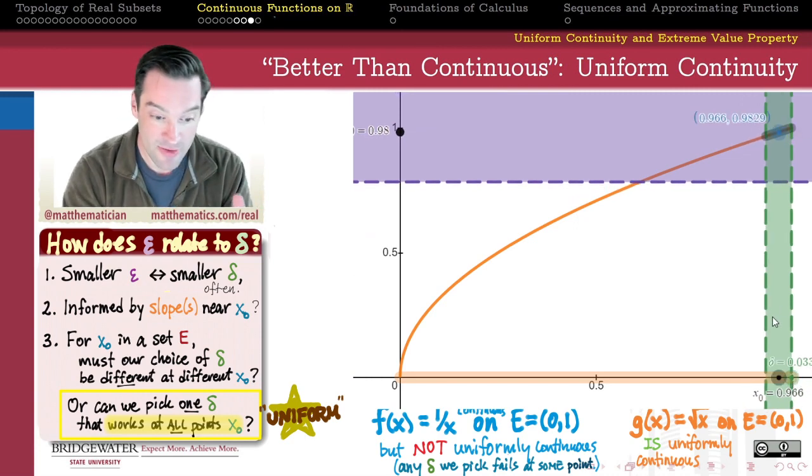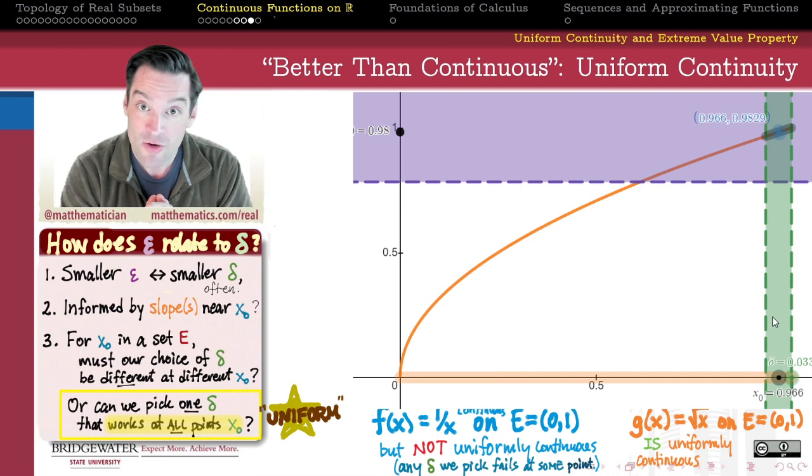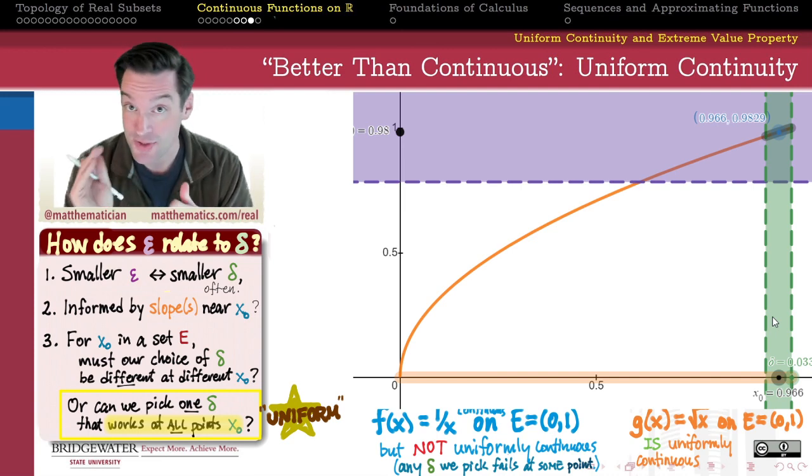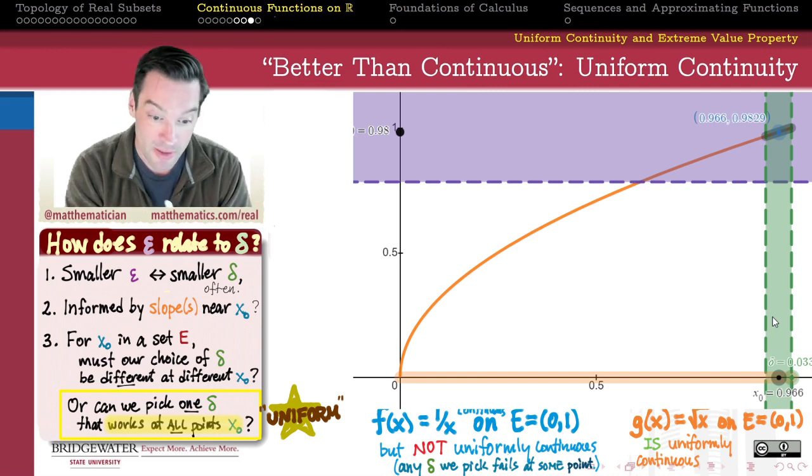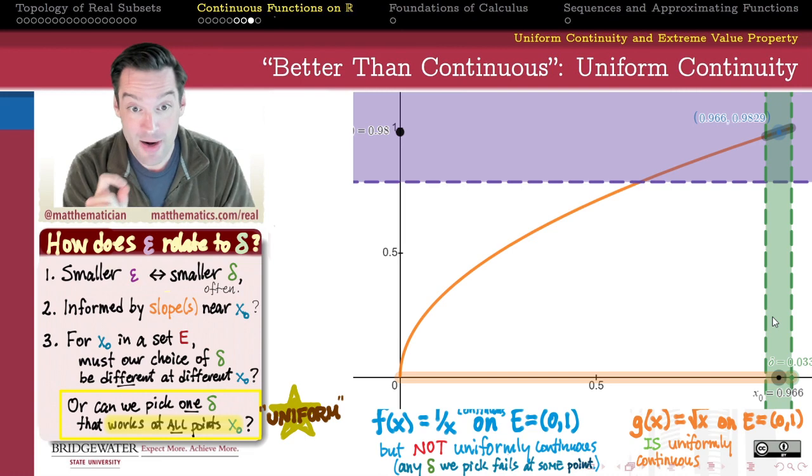So in the next video we want to dig into this idea just a little bit more. First of all what does the definition of a uniformly continuous function look like? How does it differ from the definition that we write down for just continuity for a continuous function? And then maybe more importantly what are some easy ways for us to identify uniform continuity when it happens? Are there any guarantees?